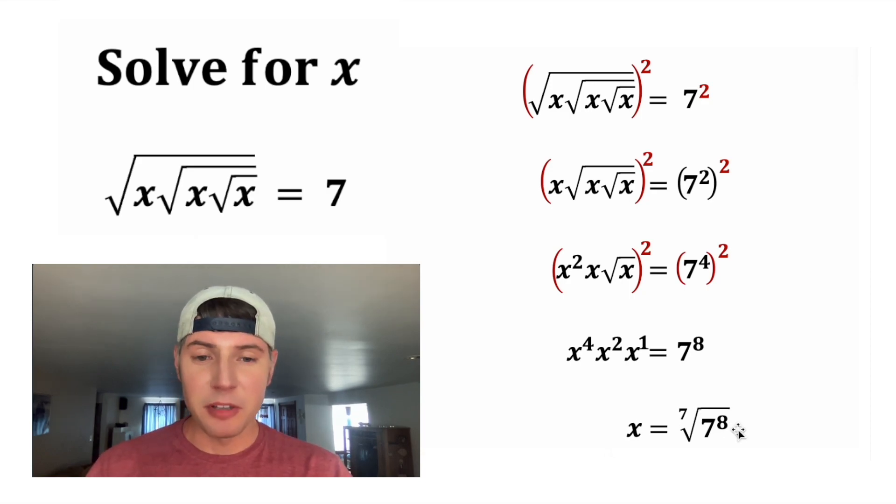And on the right hand side, we can clean this up a little bit. This 7 to the 8, let's break it into a 7 to the 7 times a 7 to the 1. Now let's give each of these their own 7th root. This 7 and this 7 will cancel out to just become 7.